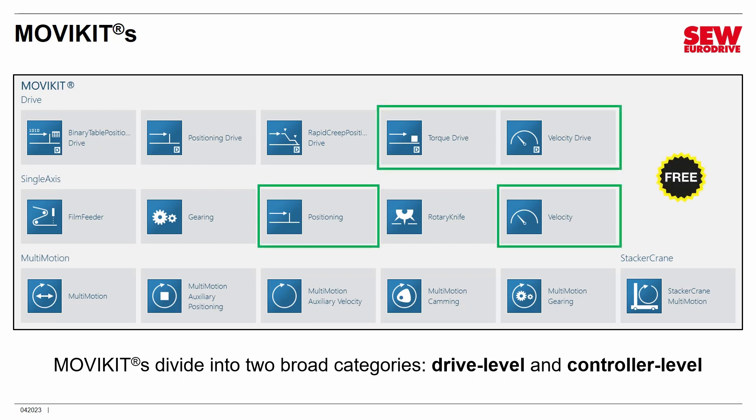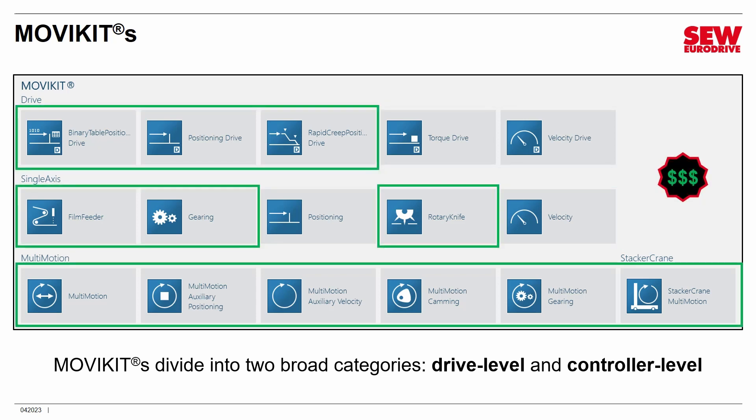There are two free drive level MoVC kits: velocity drive, which is very popular, and torque drive. Under controller level, there are two free ones at this time — velocity and positioning. All other MoVC kits do cost money, and you'll need to license them or upgrade an application level to use them.